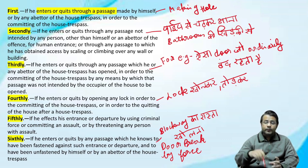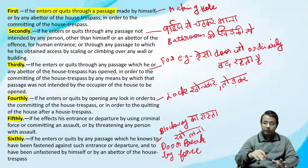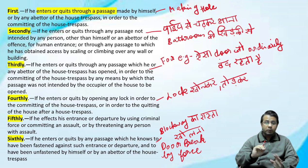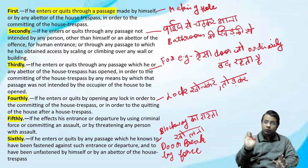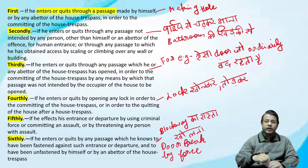Thirdly: एक ऐसा रास्ता जो ordinary time में बंद रहता है — जैसे मेरे घर का कोई पीछे का दरवाज़ा है, वो बंद रहता है, कोई वहाँ से आता-जाता नहीं है — तो उसको खोल के कोई secretly आ रहा है — तो यह house breaking हो गया।